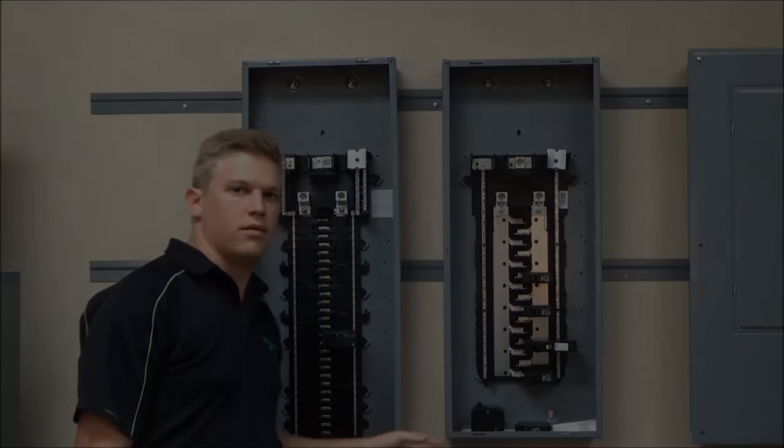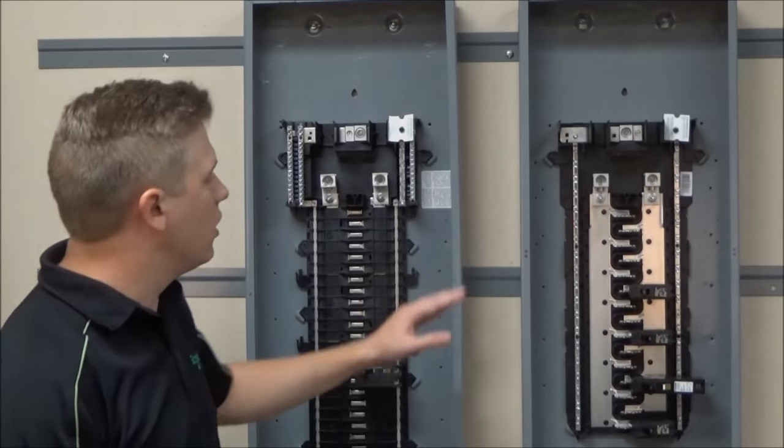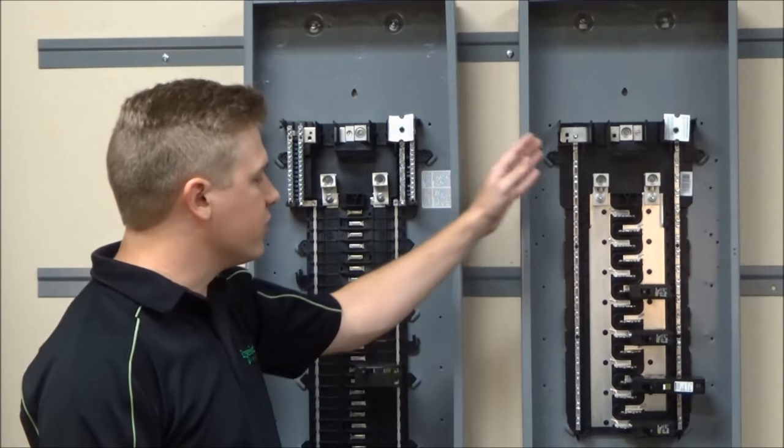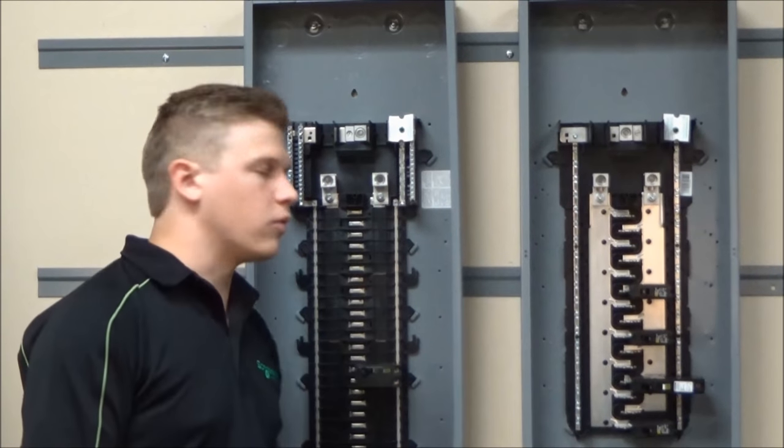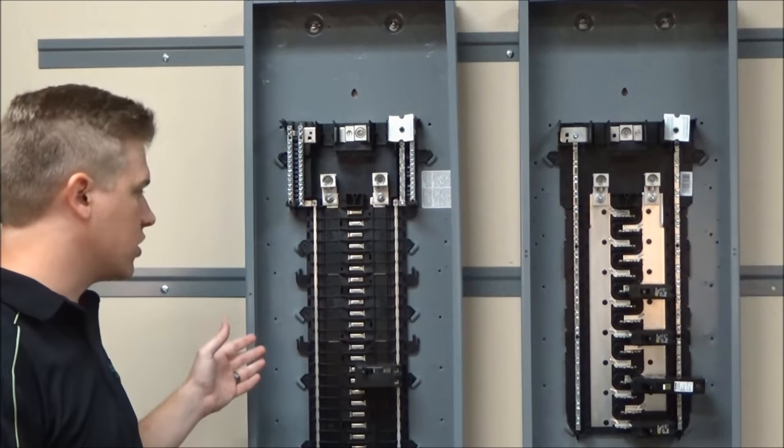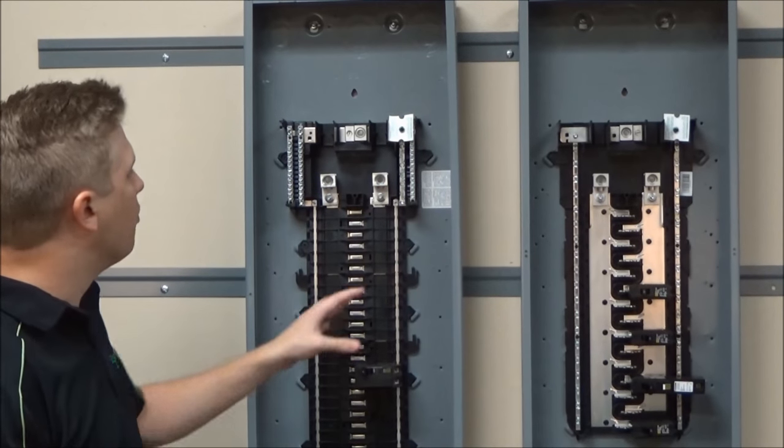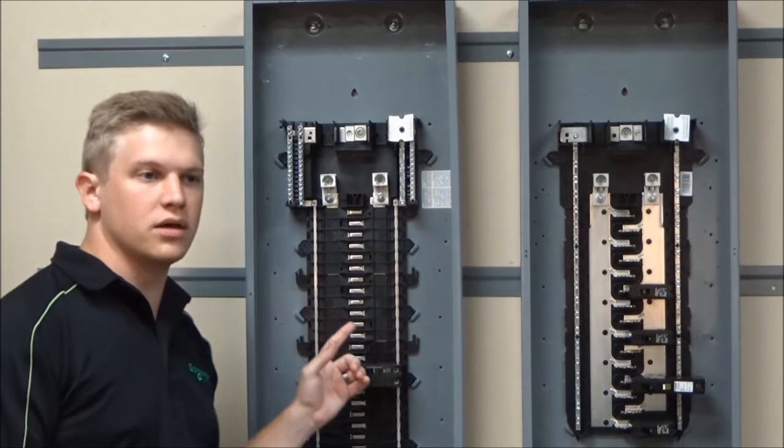The newer construction plug-on neutral Home Line load centers have every spot tandemized, whereas on the QO's the newer construction plug-on neutrals have none of the spaces tandemized. Both load centers also use the same main lugs.